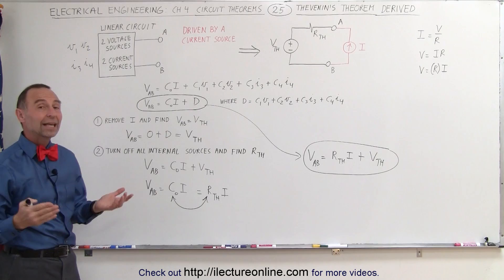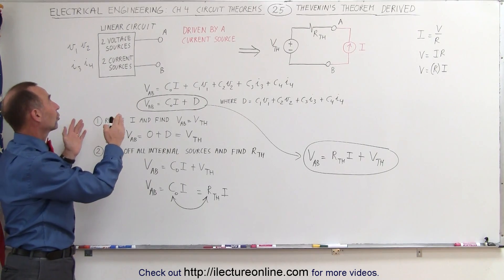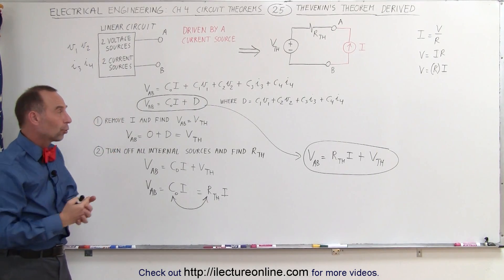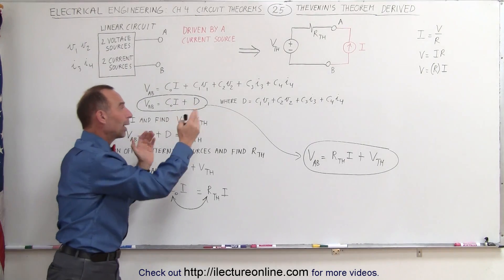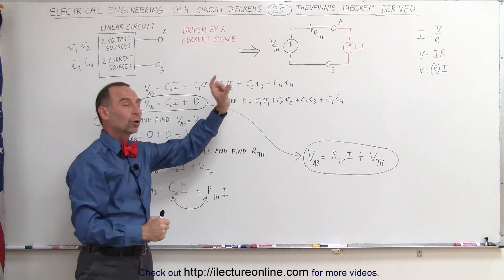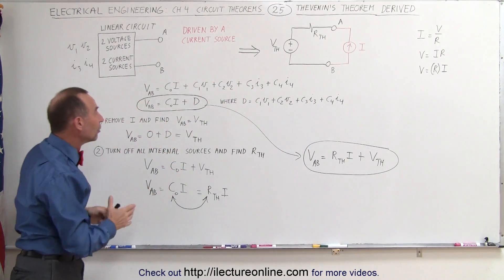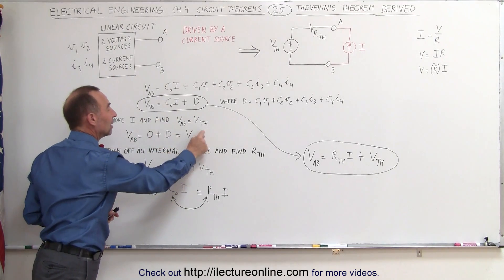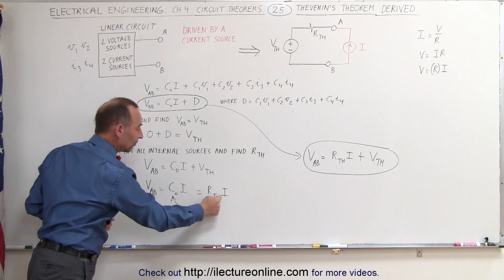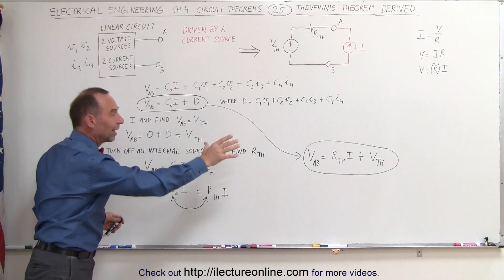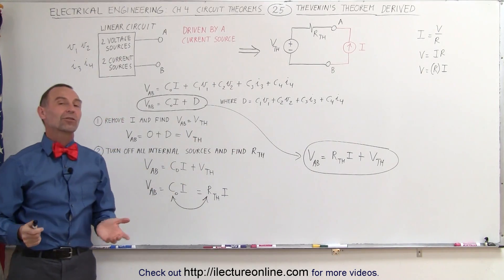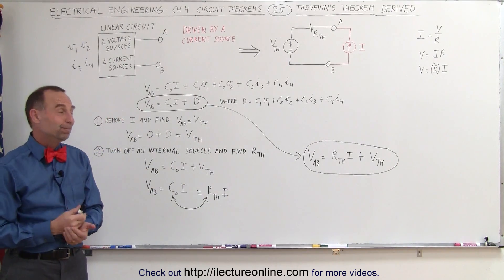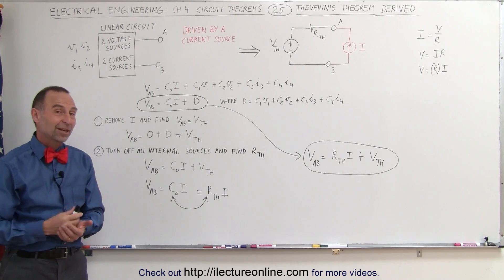That's how we can analyze any linear circuit with a number of voltage and current sources. If you drive it with a current source and make the right assumptions in each case to calculate the Thevenin voltage and the Thevenin resistance, you arrive at the very same equation that represents Thevenin's theorem. That's how it's done.